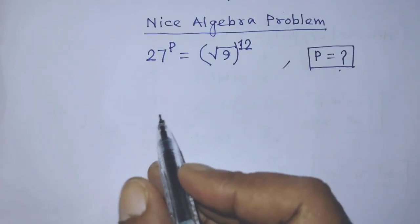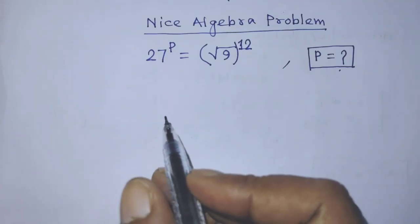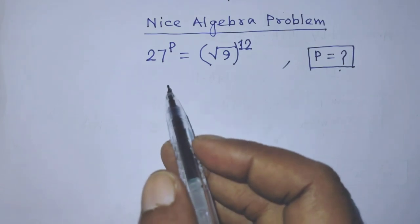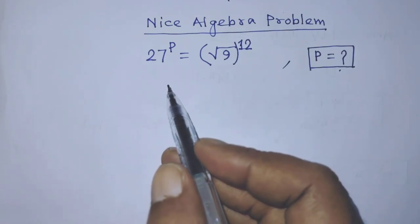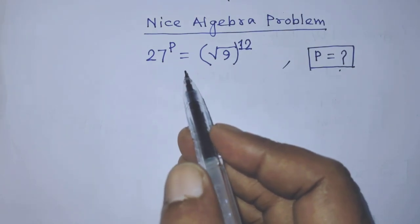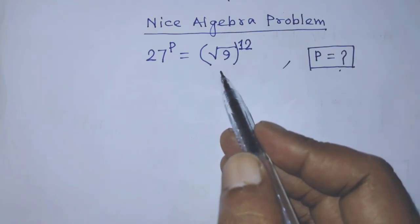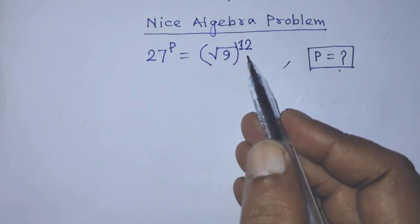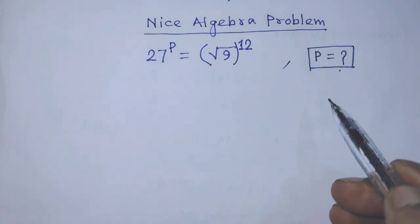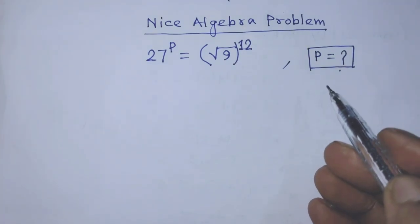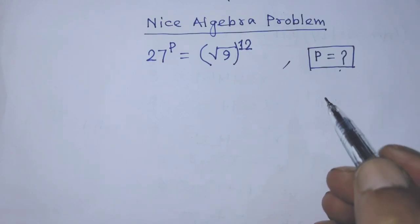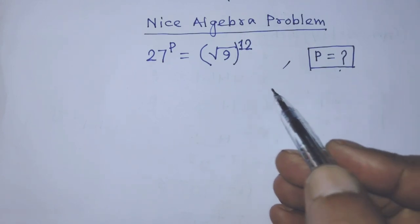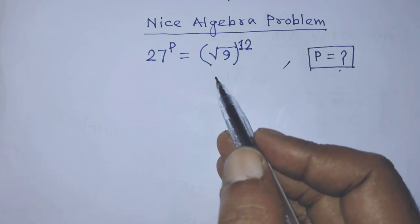Hello guys, you are welcome. Today I am telling you how to find the value of p from this equation: 27 to the power p is equal to square root of 9, whole to the power 12.